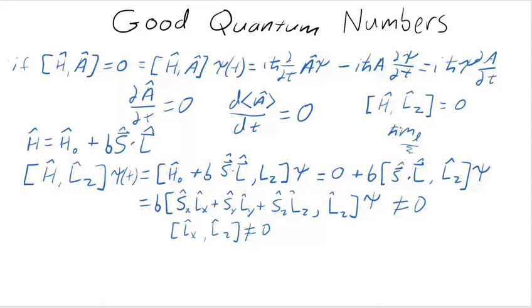Given that the commutator of l x and l sub z is definitely not zero, and the same for l sub y and l sub z, I can definitely say that they don't commute. So the quantum number m sub l along with m sub s are not good quantum numbers. As orbital angular momentum goes, so goes spin angular momentum, except when you have a good reason for that not to be the case.